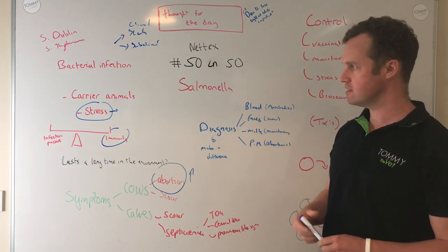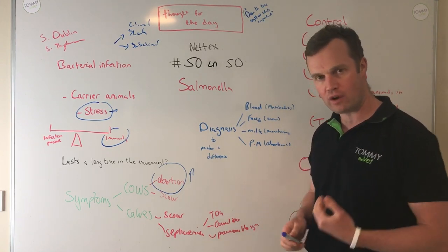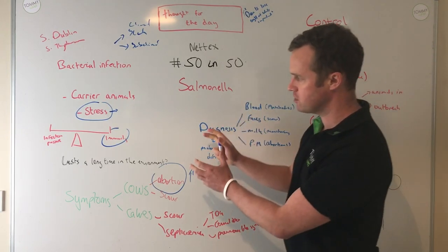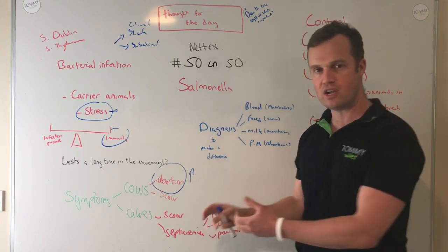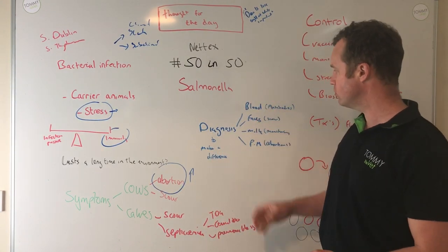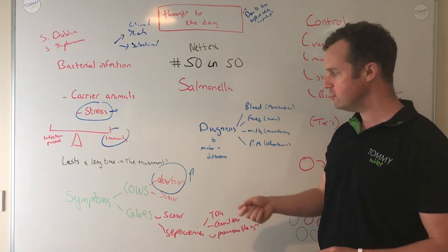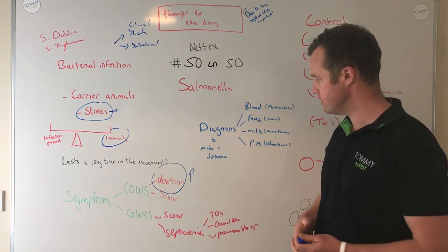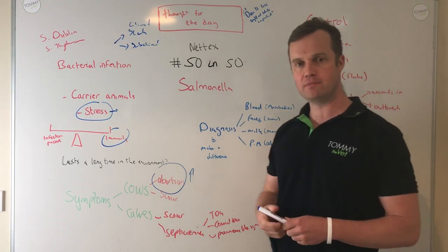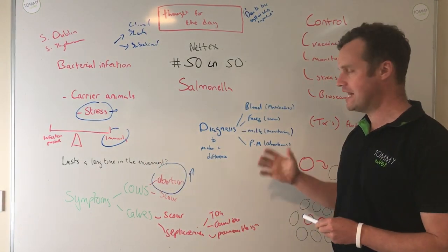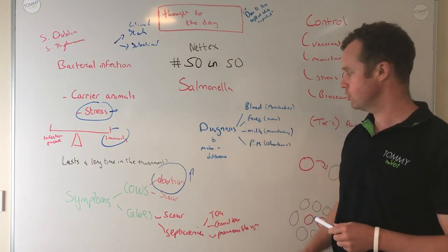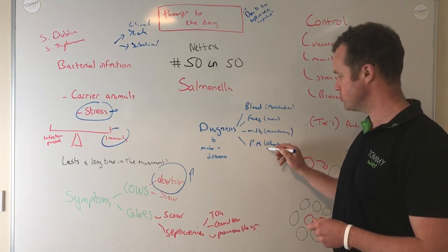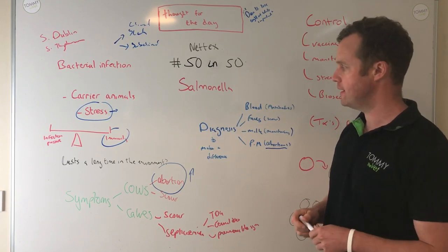Salmonella is an economically significant disease, and from a food production point of view it's very important to control. We always want to manage Salmonella on our farm. With any of these symptoms you've got to chase a diagnosis. We can use blood tests to check for antibody levels, faeces or scour samples to culture the bug itself, and in milk we can look at antibodies. In dairy herds, bulk milk sampling as part of routine screening can be valuable. Post-mortems — particularly for abortions — should also be pursued.